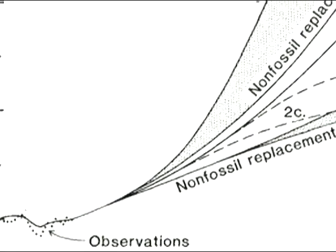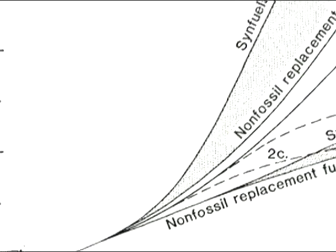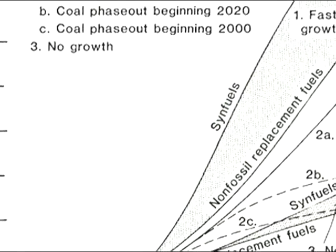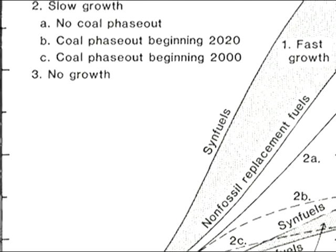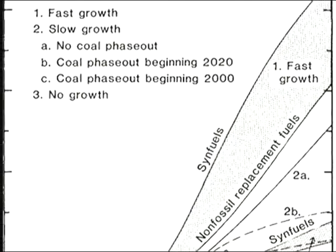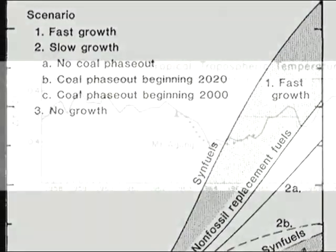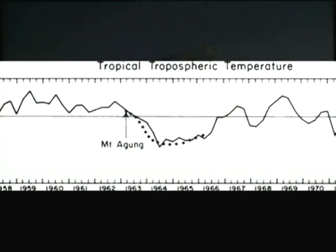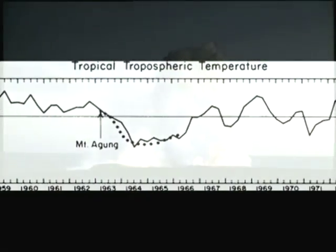In the 1970s, Dr. James Hansen and colleagues at NASA built a simple climate model to simulate how changes in the atmosphere cause Earth's average temperature to change over time.